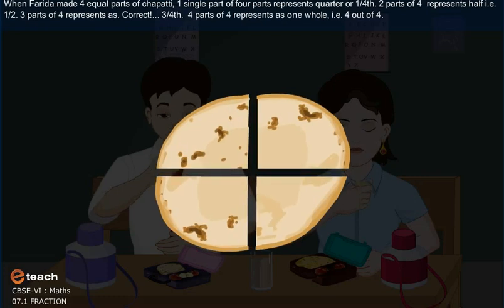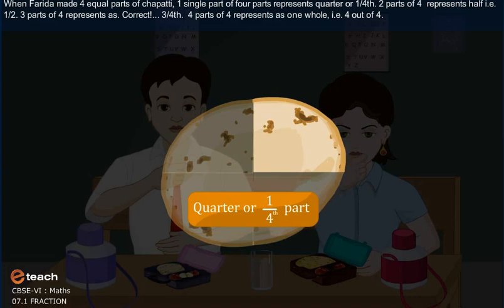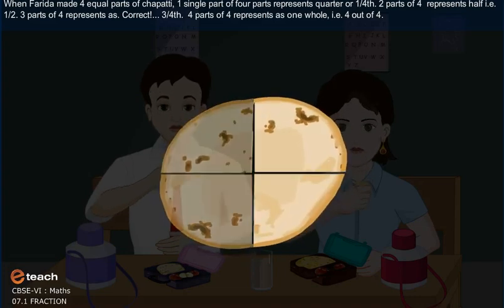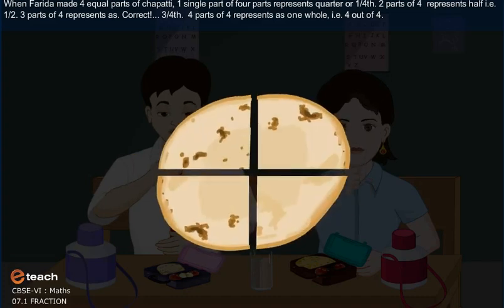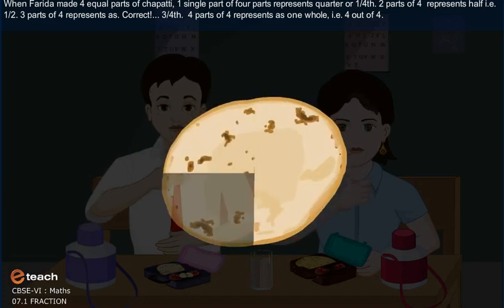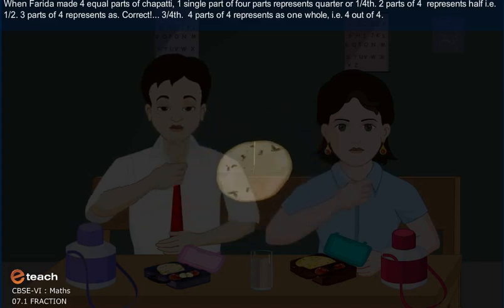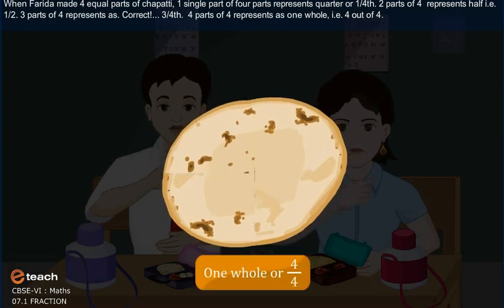When Farida divides four equal parts of chapati, one single part of four parts represents quarter or 1/4. Two parts of four represents half, that is, 1/2. Three parts of four represents... Correct! Three fourths. Four parts of four represents as one whole, that is, 4 out of 4.